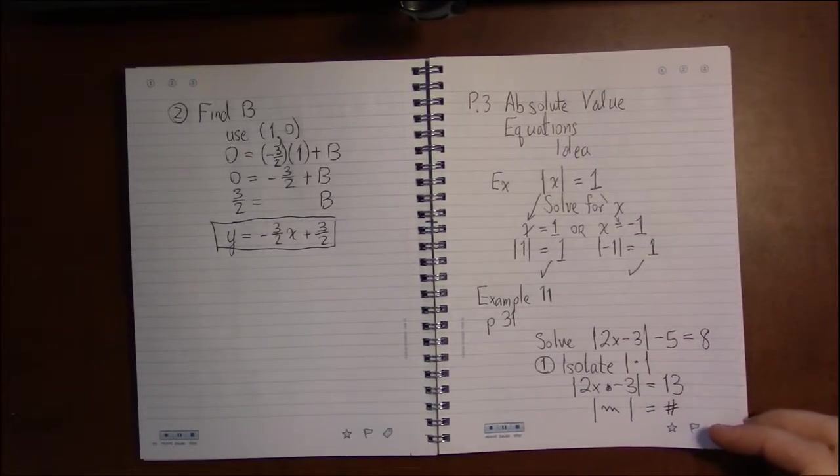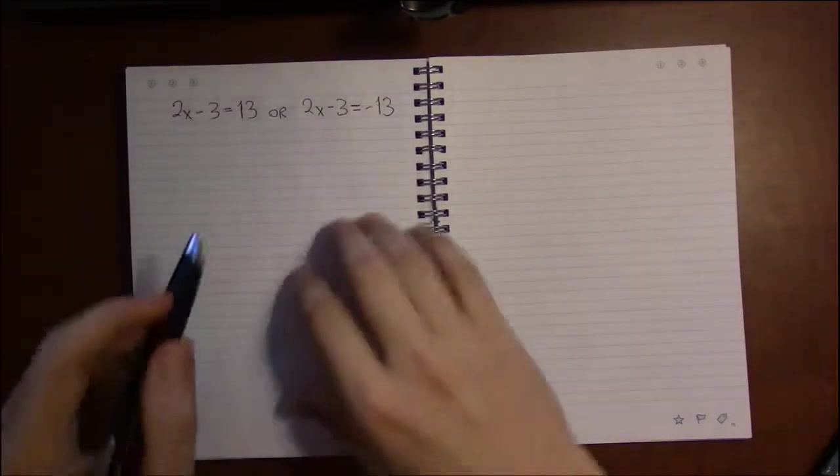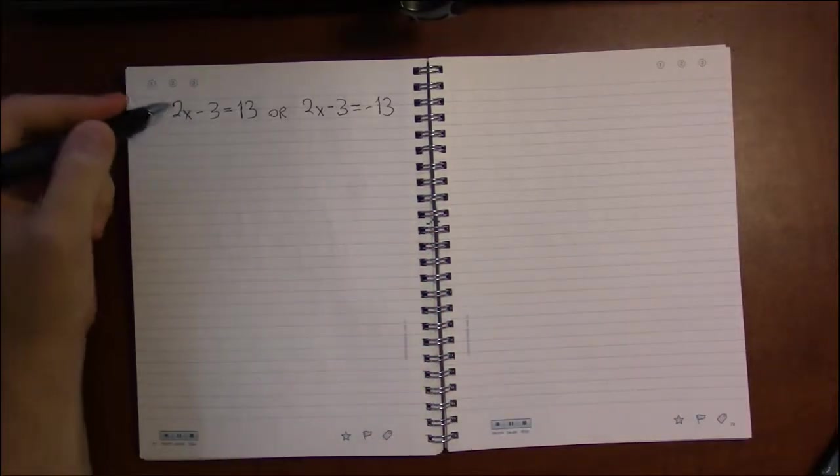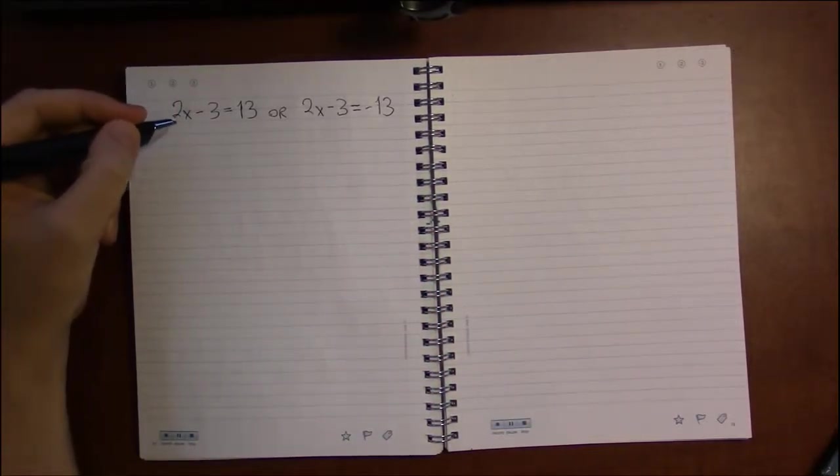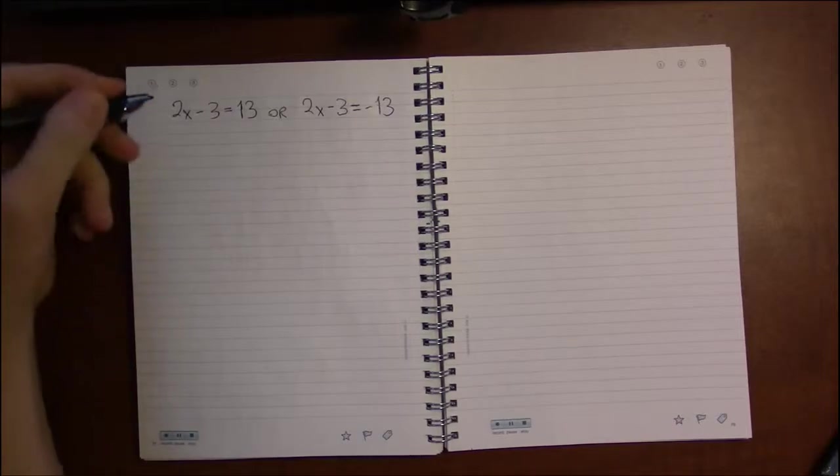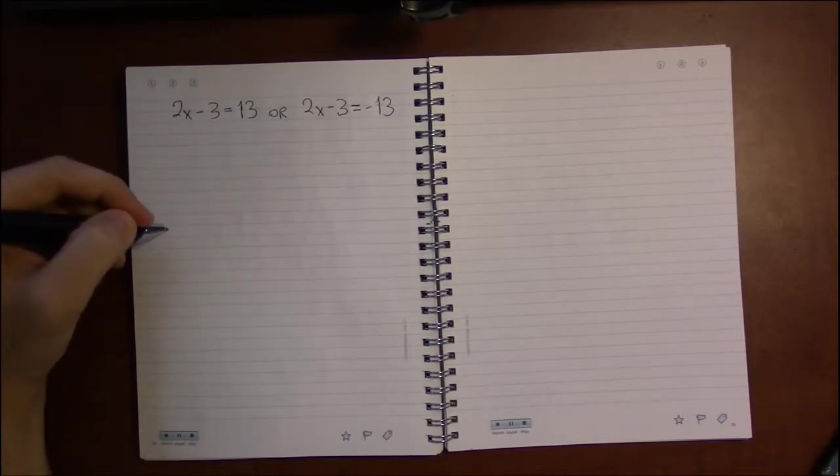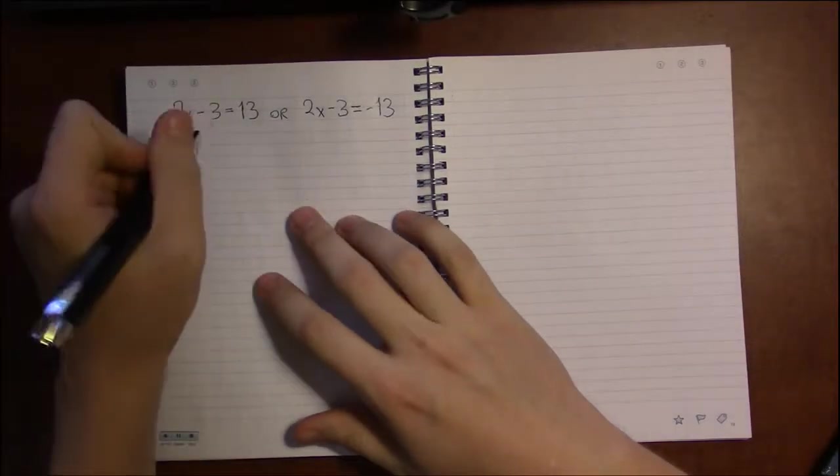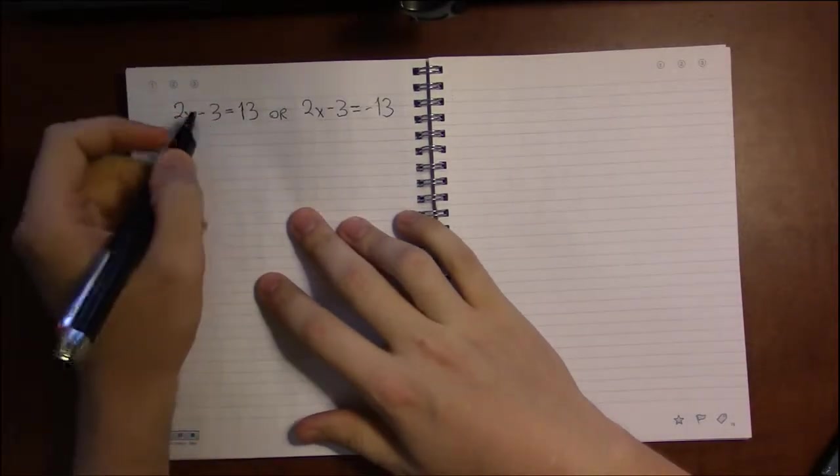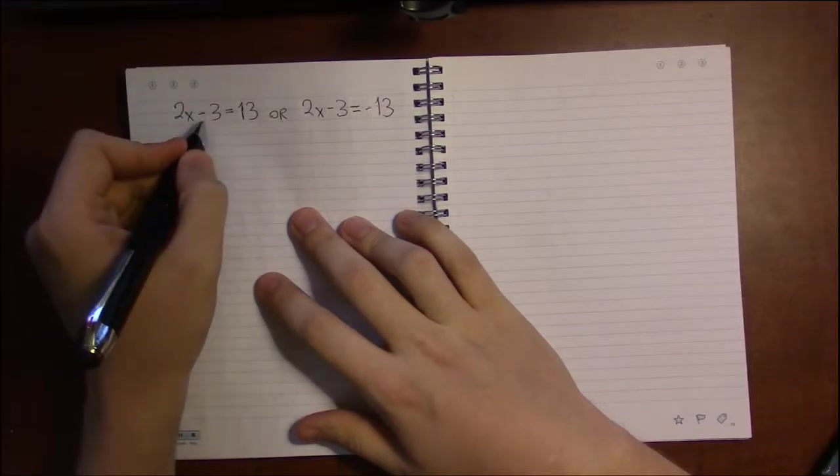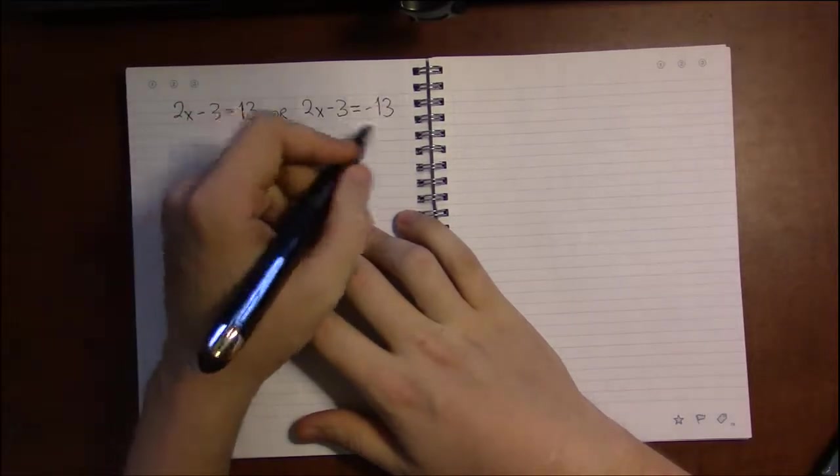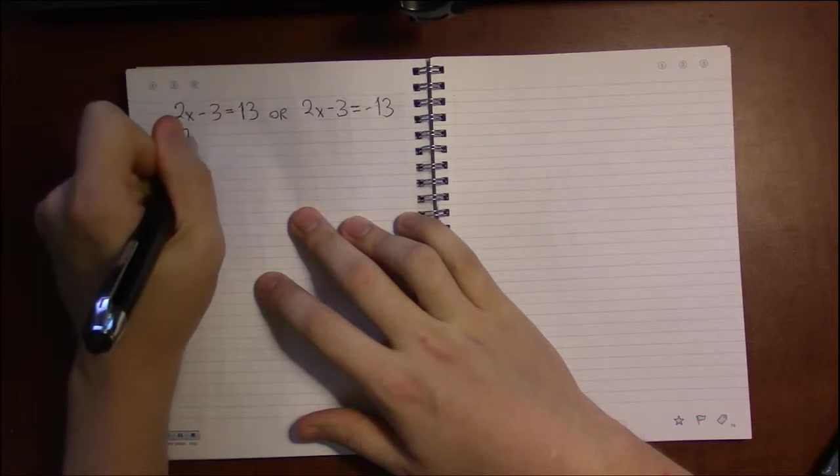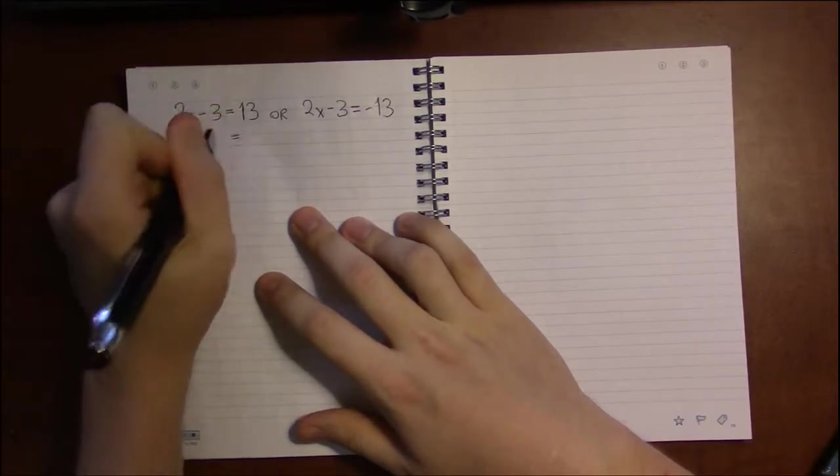So these are our two options. What's inside the vertical bars can either be 13 or it can be negative 13. Either one will give us the correct answer. So now that we've got the key step done, all we have to do is solve. Now we're just solving two separate equations. In both equations, we're going to add 3 to both sides to get 2x by itself.